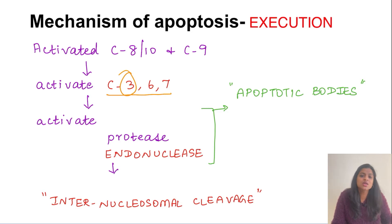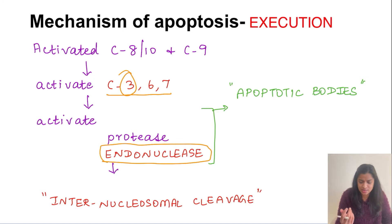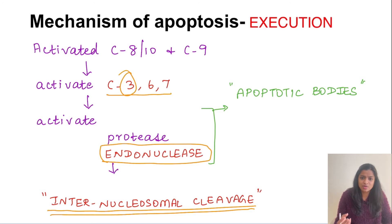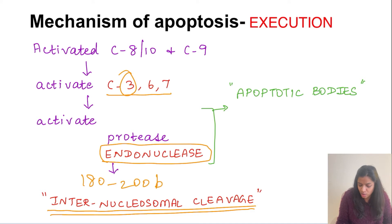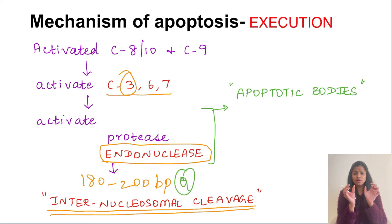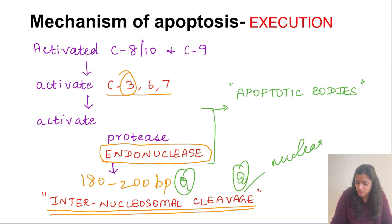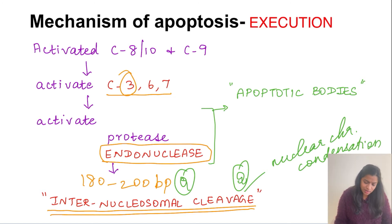The activated execution caspases activate enzymes including proteases and endonucleases. Proteases break down cytoskeletal proteins. Endonucleases are the most important here — they cause internucleosomal cleavage of the nucleus, fragmenting DNA into pieces of 180 to 200 base pairs. This internucleosomal cleavage is responsible for nucleochromatin condensation, which is the characteristic feature of apoptosis.